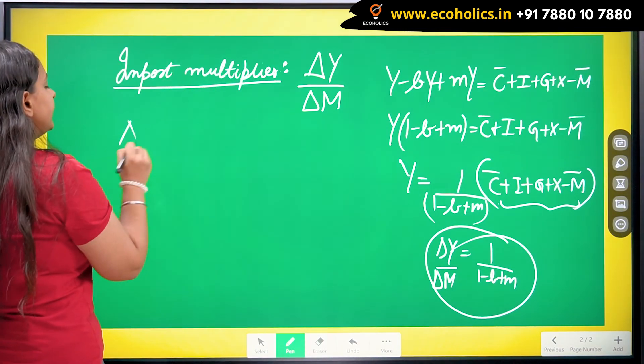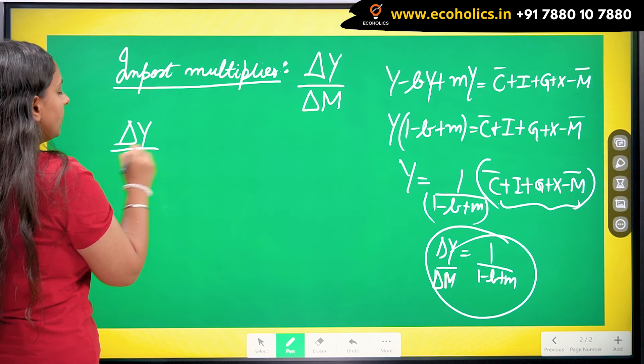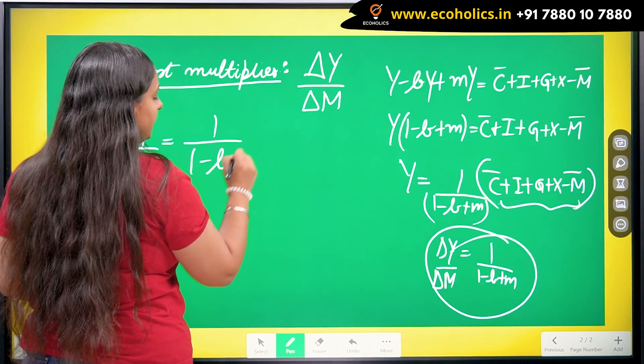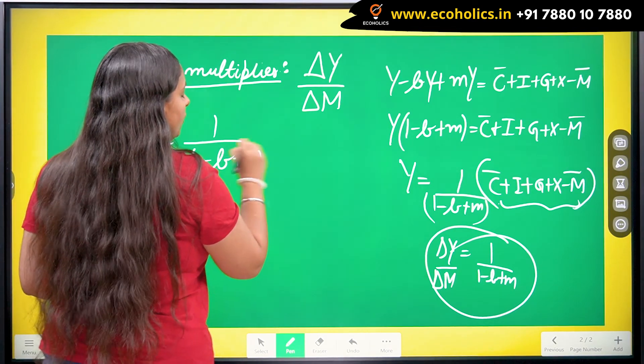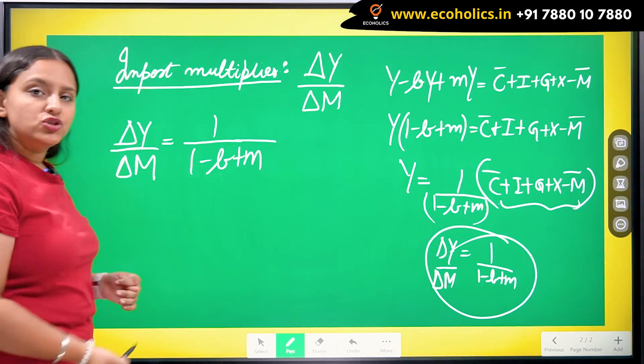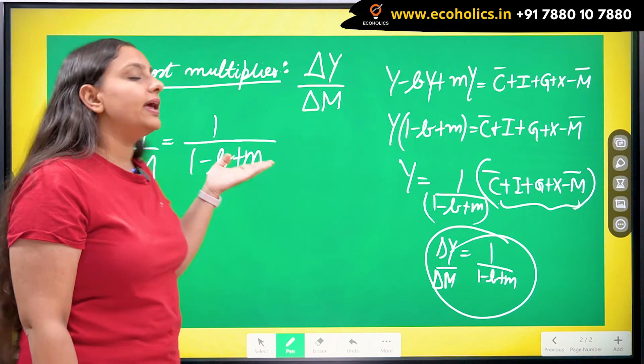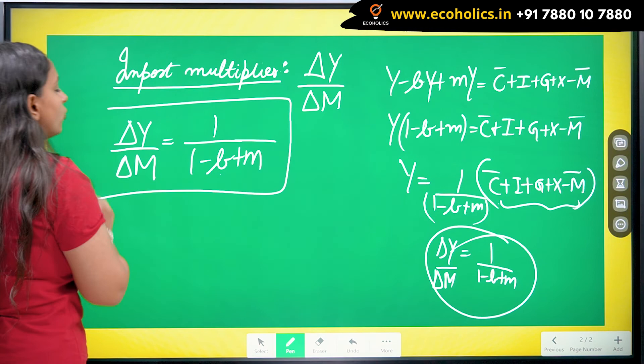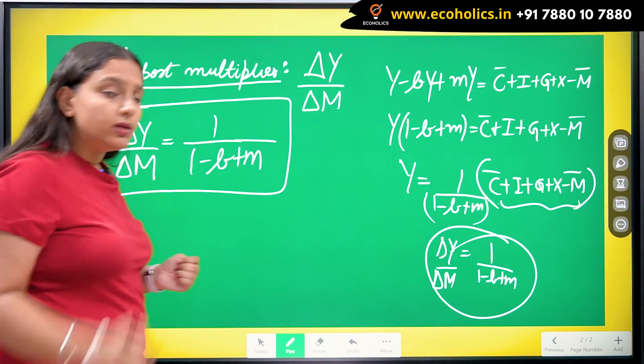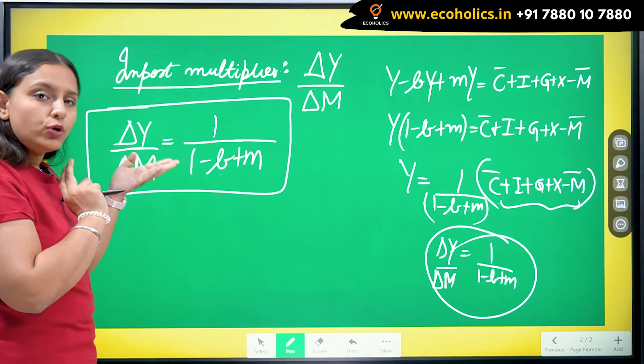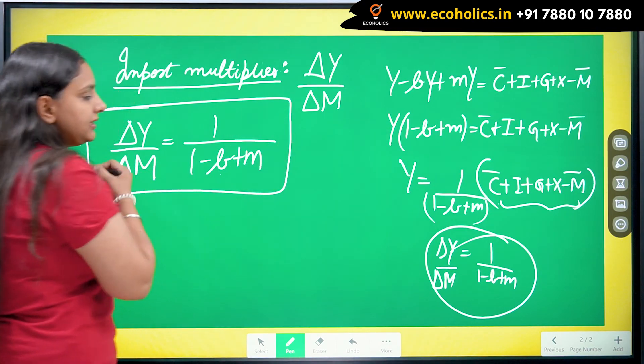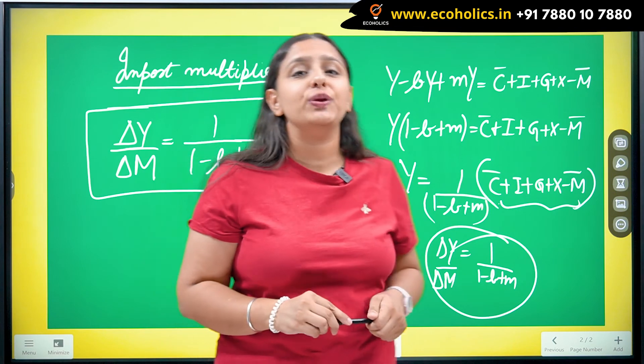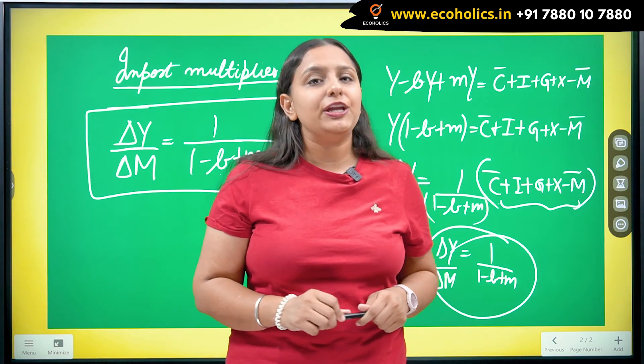Import multiplier is given by 1 upon 1 minus B plus M, where B is the marginal propensity to consume and M is marginal propensity to import. Whenever the imports are going to change by one unit, the Y, the output or the equilibrium income, is going to change by these number of units. This was the derivation of import multiplier in Keynesian economy.